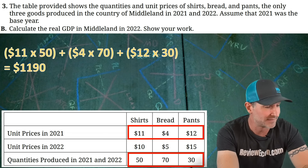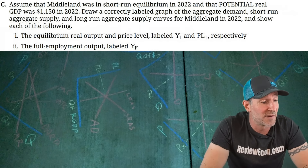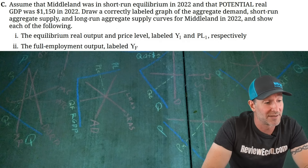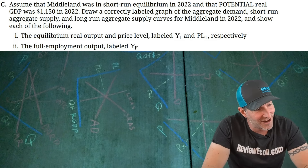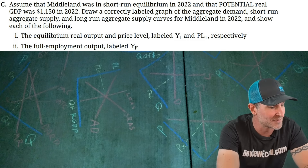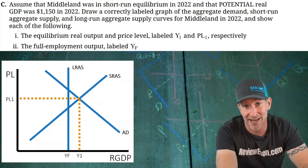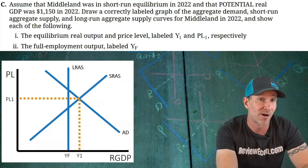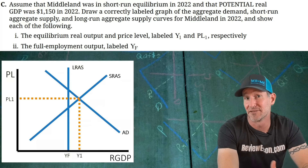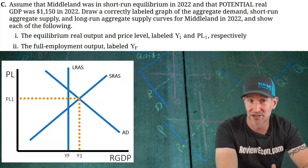Make sure to show all your work. For Part C, assume Middleland is in short-run equilibrium in 2022 with potential real GDP of $1,150. We draw a correctly labeled AS-AD graph with a downward-sloping AD, upward-sloping SRAS at the equilibrium point, real GDP on the x-axis, and price level on the y-axis. Y1 is labeled at the equilibrium output and YF at the long-run aggregate supply curve. Since our real GDP of $1,190 exceeds potential output of $1,150, the economy is in an inflationary gap.